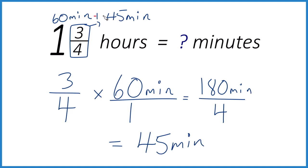So now we just add them together. 60 minutes plus 45 minutes, that equals 105 minutes. So 1 and three-quarters of an hour, that is equal to 105 minutes. Final answer there.